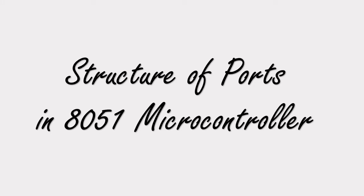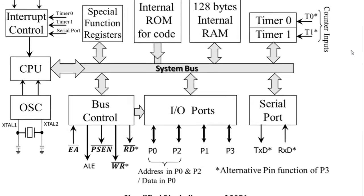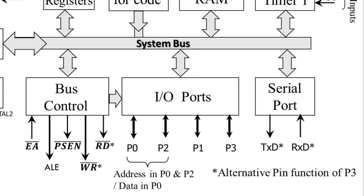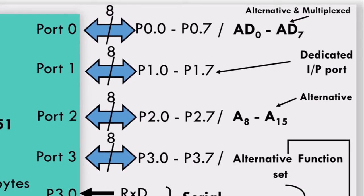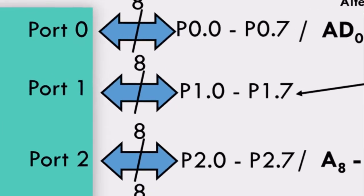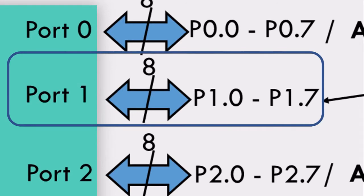Today's topic is ports of 8051. This is the architecture of 8051. We have four ports: port 0, port 1, port 2, and port 3. Each port has 8 pins, and there are ports having alternative functions. All ports can do input-output operations. The fun fact is that only port 1 is a dedicated input-output port, meaning it doesn't have any alternative function. The properties of port 1 will be common to all other ports, so we will learn first how port 1 works.